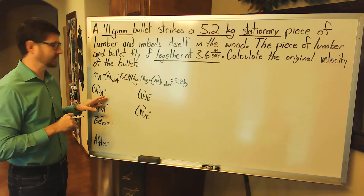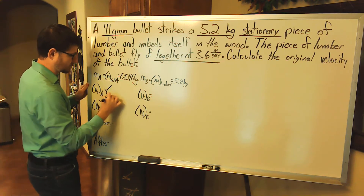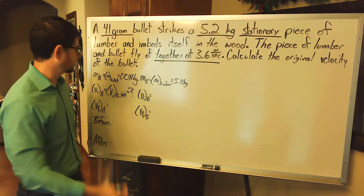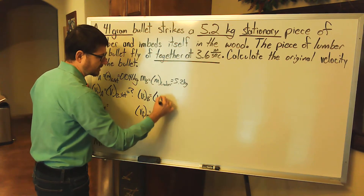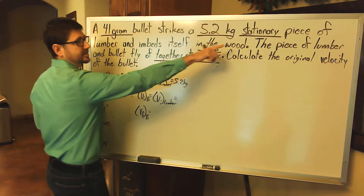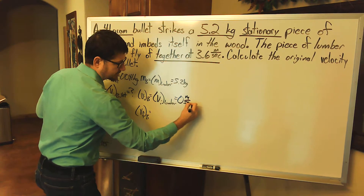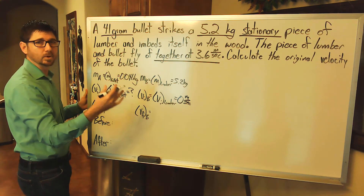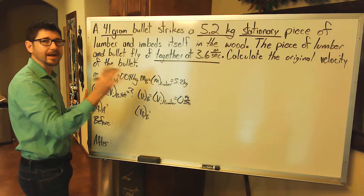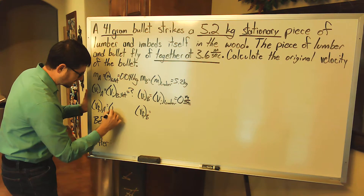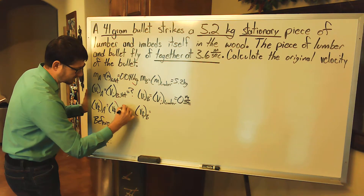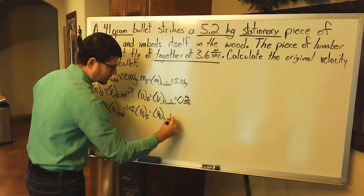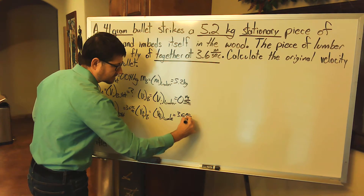We do not know the initial velocity of object a, which is the bullet. So this is going to be v-i sub bullet — I'm just going to put a question mark there because this is our unknown. The initial velocity of object b, the initial velocity of the lumber, it says that it's stationary, so 0 meters per second. The final velocity of the bullet and the lumber are the same because the bullet embeds itself in the piece of lumber and they fly off together at 3.6 meters per second. So the final velocity of the bullet is 3.6 meters per second, and the final velocity of the lumber is 3.6 meters per second.